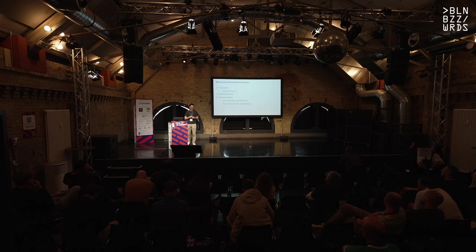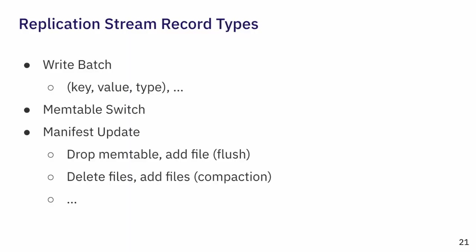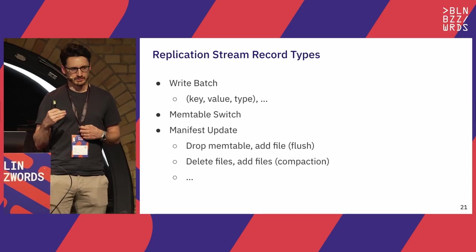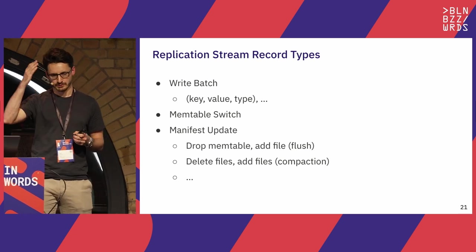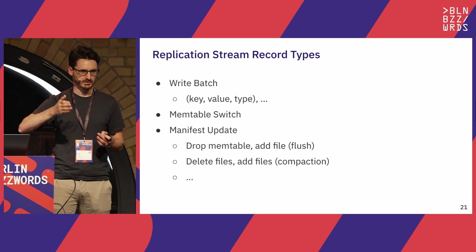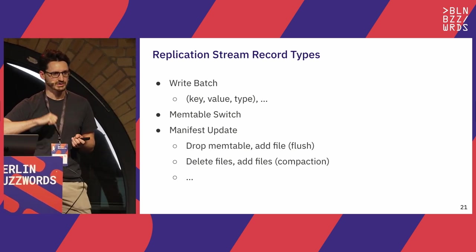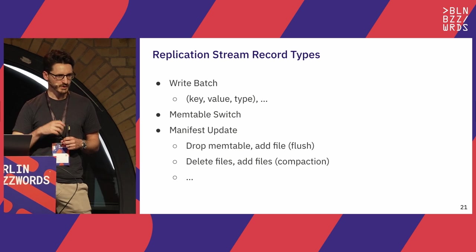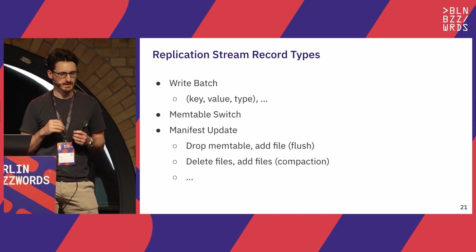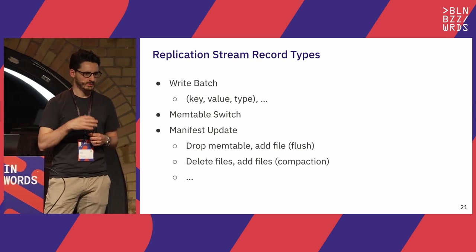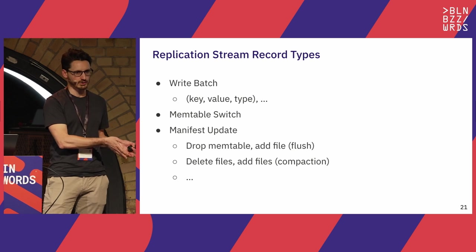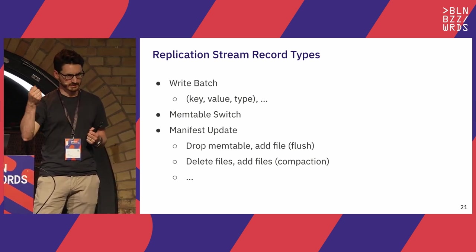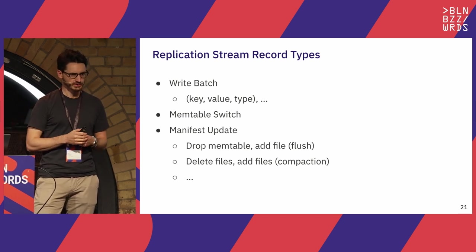What's in a replication stream record? It could be a write batch — RocksDB terminology for a physical delta, literally a list of key-value updates with a type: delete, merge, or insert. There's a memtable switch record, sent when the memtable is sealed, ensuring memtable contents are synchronized between ingest and query workers. There's a manifest update sent on flush — 'drop the current memtable and add this file atomically.' And a compaction record just tells you which files to delete and which to add, with those files already present in hot storage.